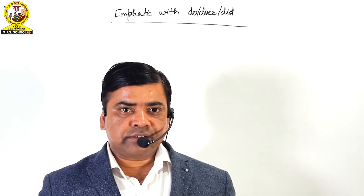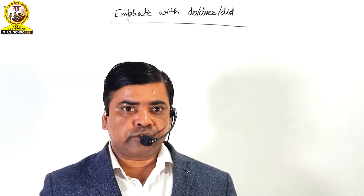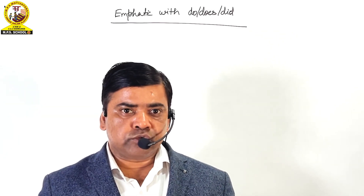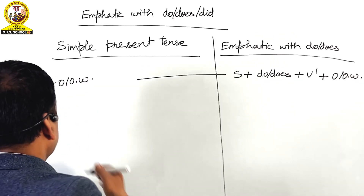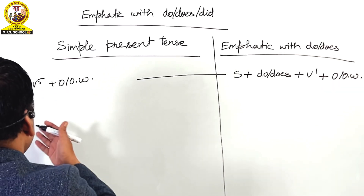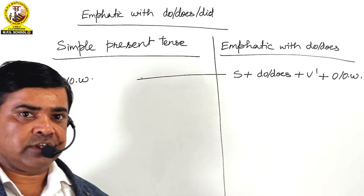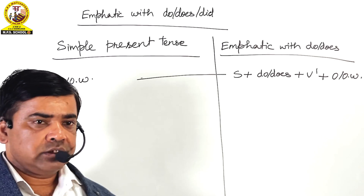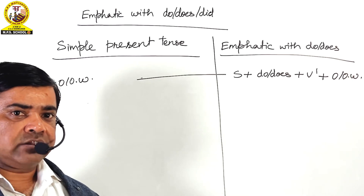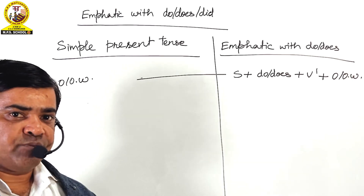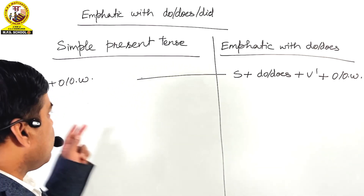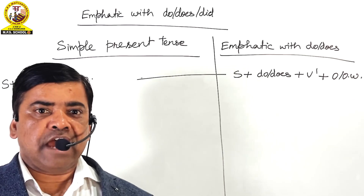But do, does, and did are also used to make emphatic sentences. Let us learn how to use do and does. Here you can see the structure formula: subject plus V1 or V5 plus object or other words written on the board. We all know that this formula is used in simple present tense — this is the first structure formula of simple present tense — and it is used to make affirmative sentences.